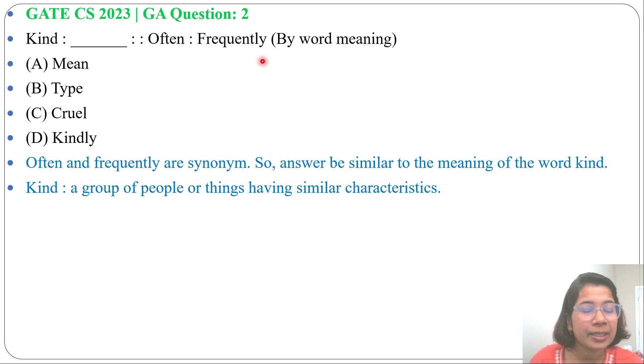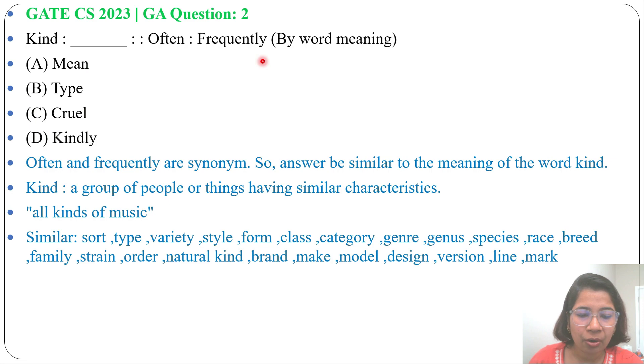Kind means a group of people or things having similar characteristics - all kinds of music, you are of my kind, you are of my type. Similar words for kind are: type, variety, style, form, class, category, species, race, breed, family, strain, order, natural kind, brand, make, model, etcetera.